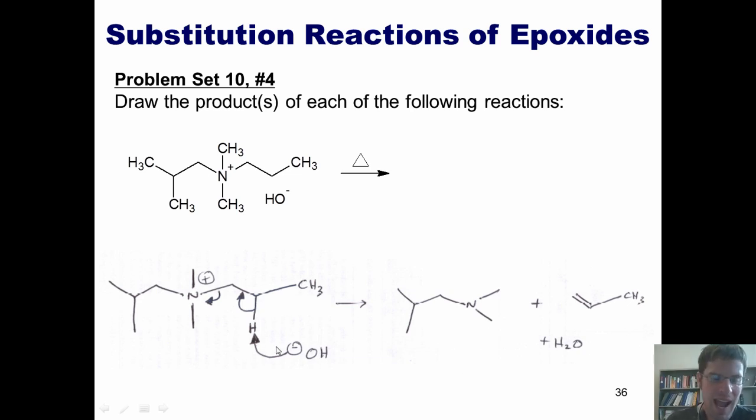Now, you might look at this and ask, couldn't the hydroxide grab a proton off of this carbon, pump the electrons down here, and then push these two electrons into the nitrogen, giving me a double bond between these two carbons here? That would be a more substituted alkene and would seemingly therefore be a more stable alkene by Zaitsev's rule. Well, the short answer is yes, that could happen. However, it doesn't, for reasons that are discussed on pages 436 and 437 of our text, which I won't share here.